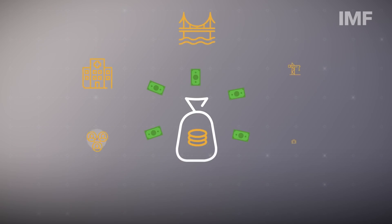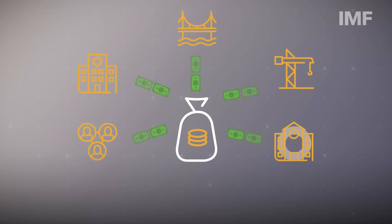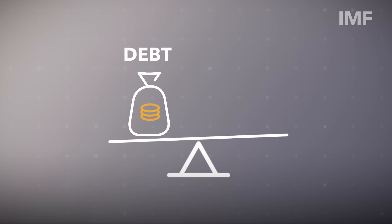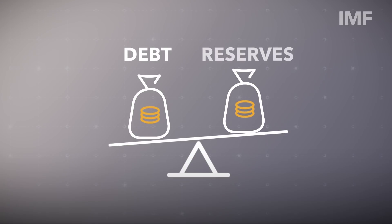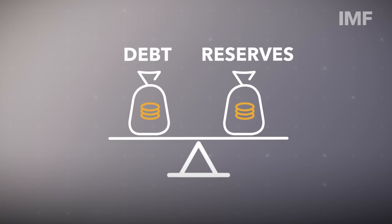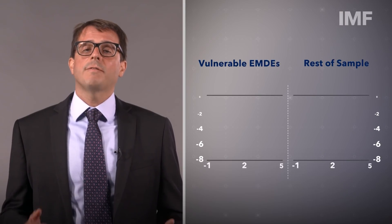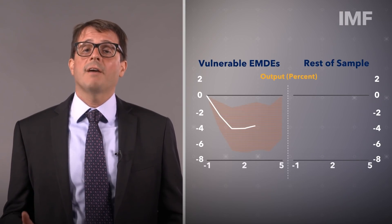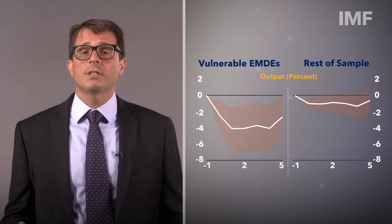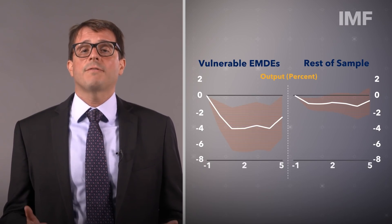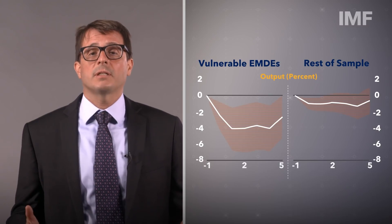Debt isn't always bad, though. It can help finance important investments like hospital construction or broadband networks. But it's important for countries to limit the debt they take on in foreign currencies and to have enough foreign reserves to protect against economic downturns. We also find that in countries that already have external vulnerabilities — including high debt and low reserves — growth drops faster when a downturn happens.